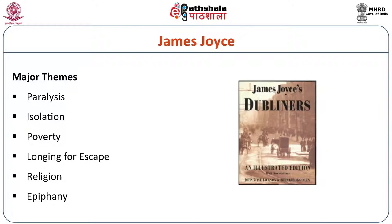The major themes that Joyce tries to address in this collection of short stories include paralysis, isolation, poverty, longing for escape, religion, and epiphany. Let's look at some of these things — poverty, religion, epiphany. These are things that recur in Joyce, particularly religion and epiphany.